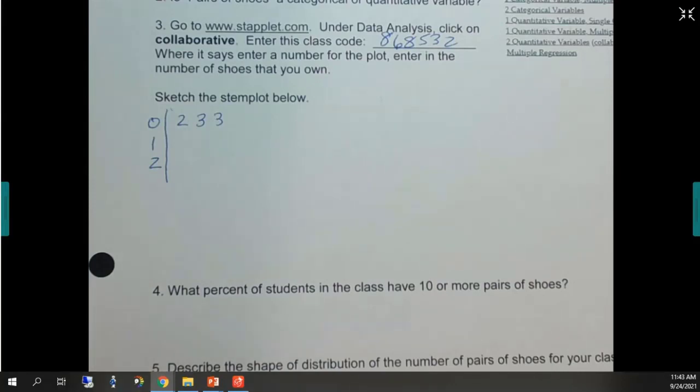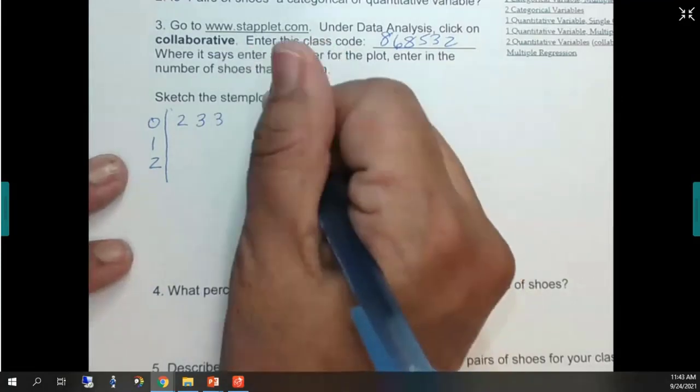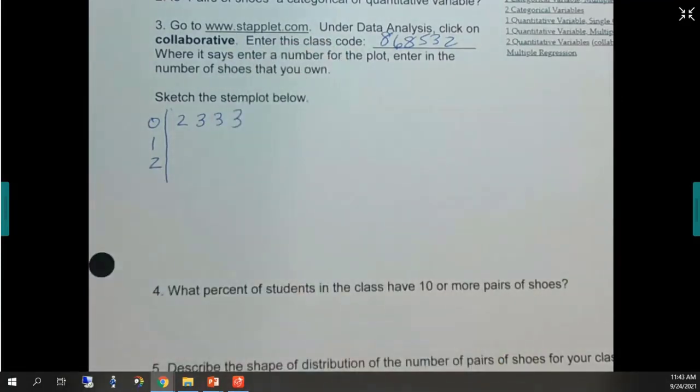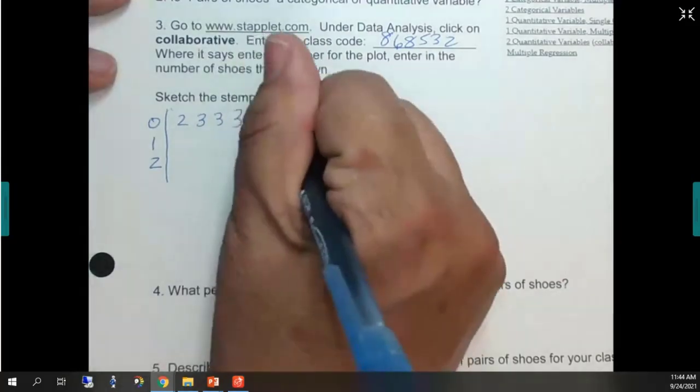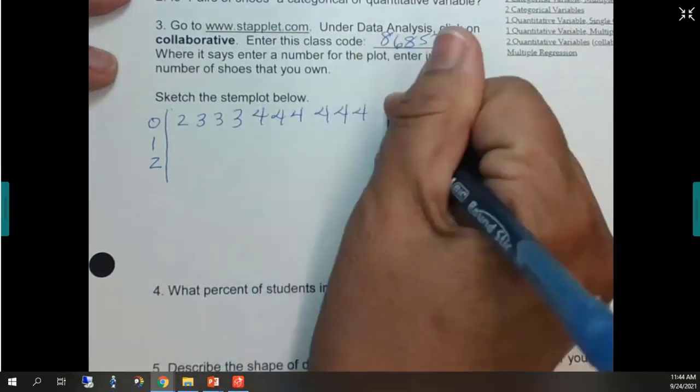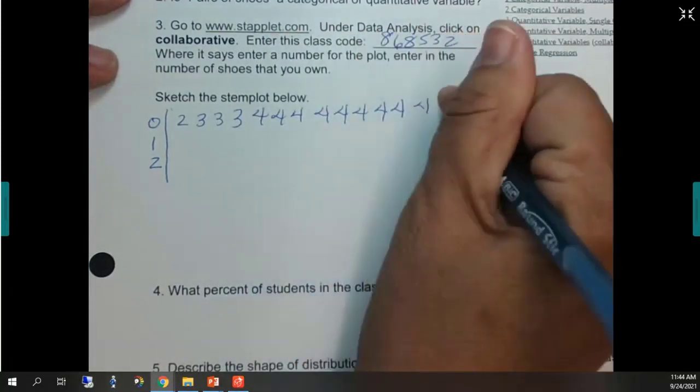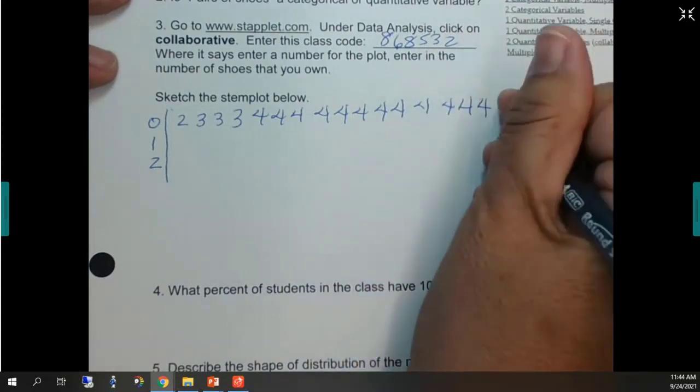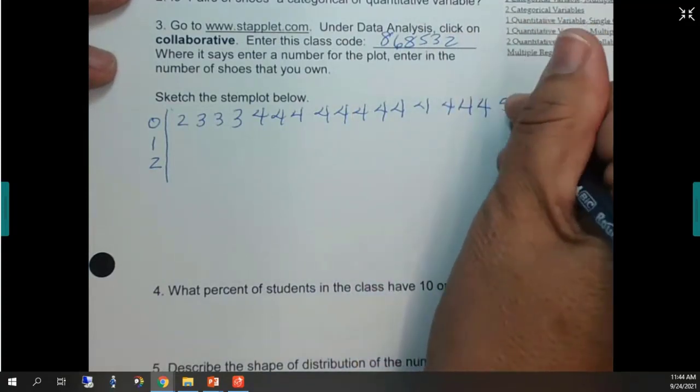All right. There are actually twelve fours. And two, three, one, two, three, two, three, four. Well, someone might have added a four. That's why I paused the data collection.